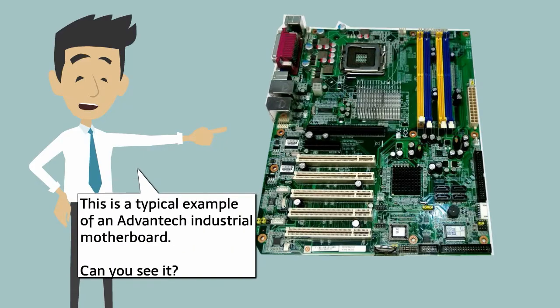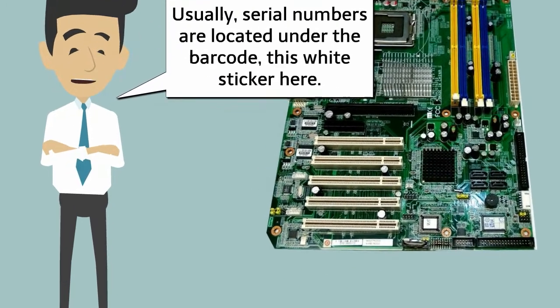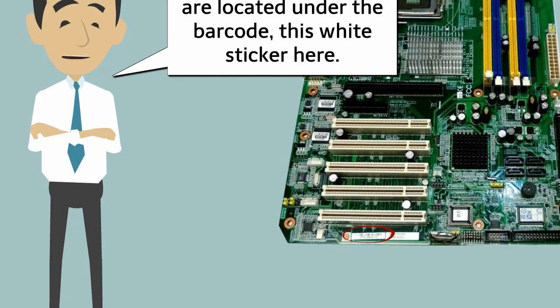This is a typical example of an Advantech industrial motherboard. Can you see it? Here it is. Usually, serial numbers are located under the barcode, this white sticker here.